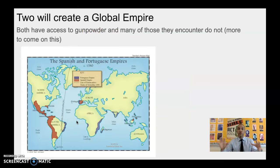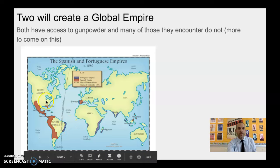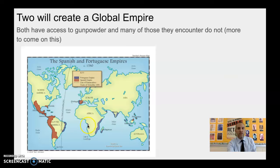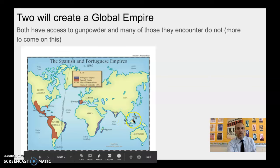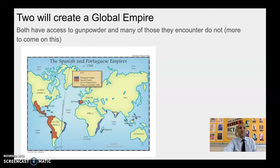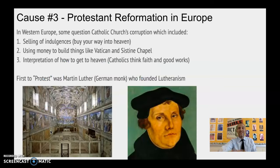Together, these two groups are going to create a global empire. The Portuguese are going to have a piece of land in South America, some areas on the Swahili coast, the west coast of Africa, a little in India and over in that region. We also have the Spanish with their vast territory. We'll get into a lot of that in the next video, but the two together create a global empire.